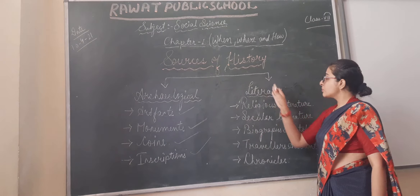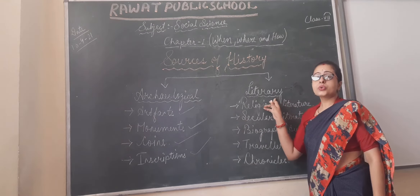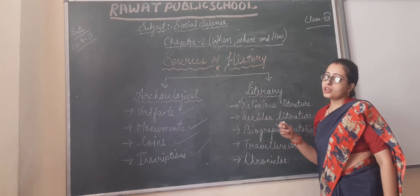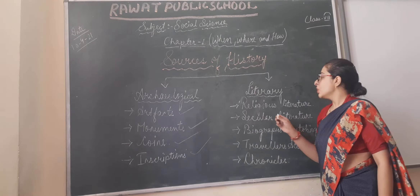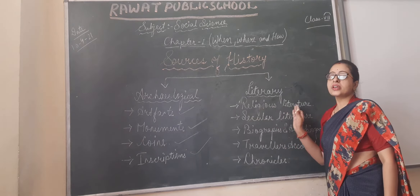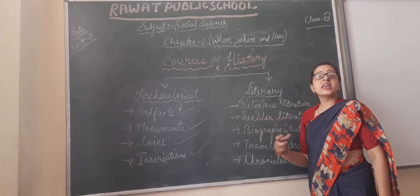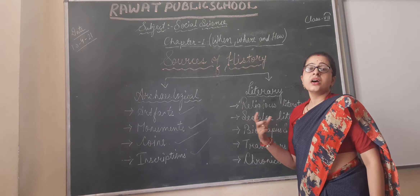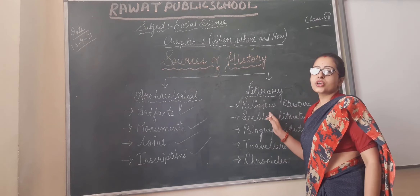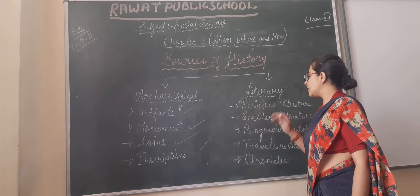Next comes literary source. Literary sources, as already mentioned, are sources which are in written form. First of all, literary source includes religious literature like Ramayana, Mahabharata, and sayings or reference sayings and Dohas, etc., which give us very much information about our history.